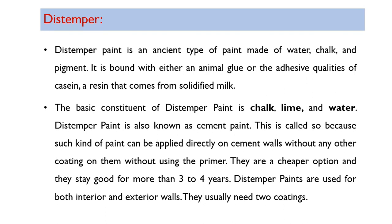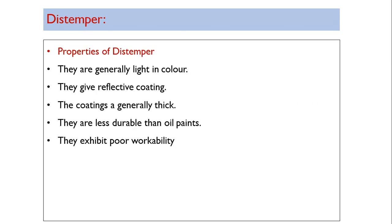The minimum life is three years up to five years. After three years the colors start to fade. Distemper paints are used for both interior and exterior walls. Two coatings are normally applied — first coat and second coat — and no primer is required.